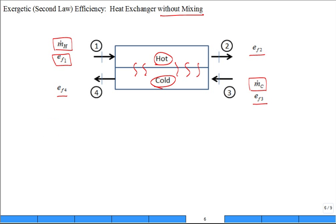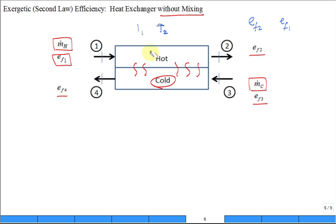A couple of questions before we get too bogged down. Can you compare EF2 and EF1 — which one is greater? Are they the same? No, they're not the same. It'll really help you to think about temperature one versus temperature two. Is temperature one greater than or less than temperature two? It's greater — that's exactly right. So the flow exergy at two is going to be less than at one, meaning EF1 is greater than EF2.